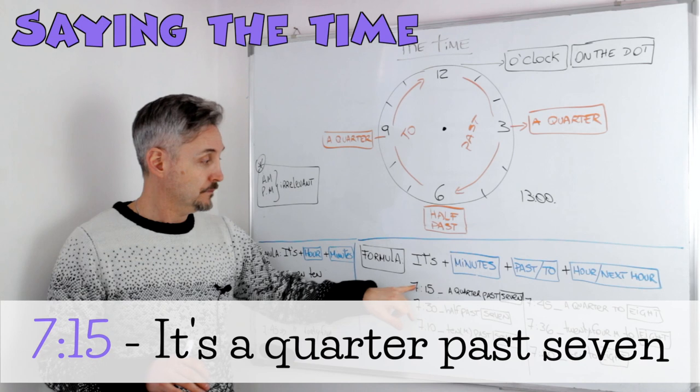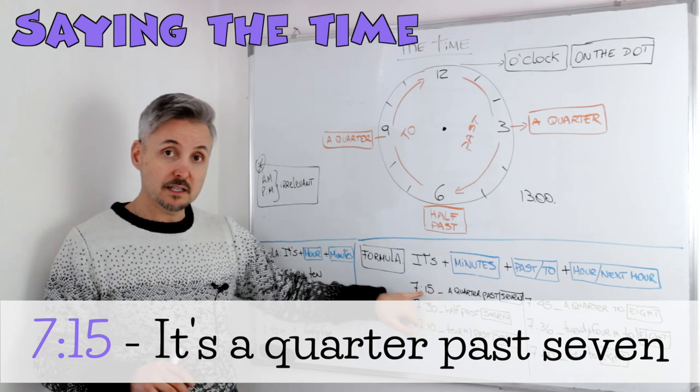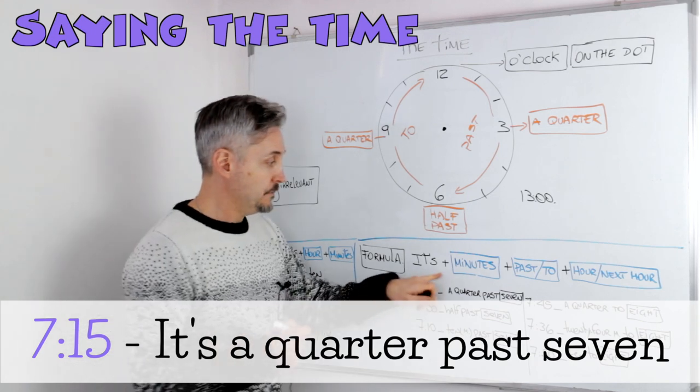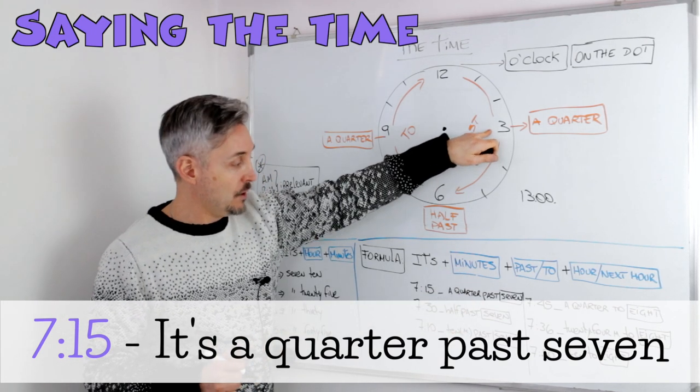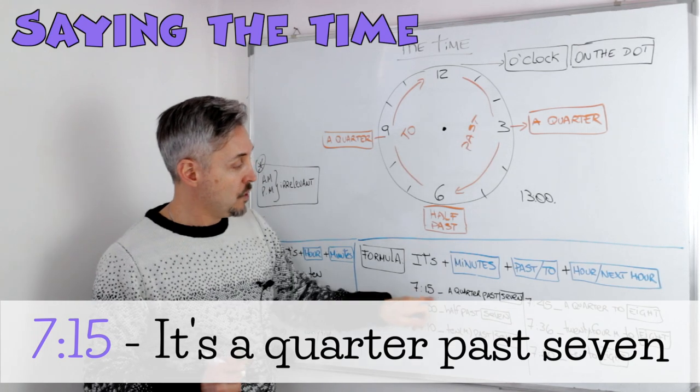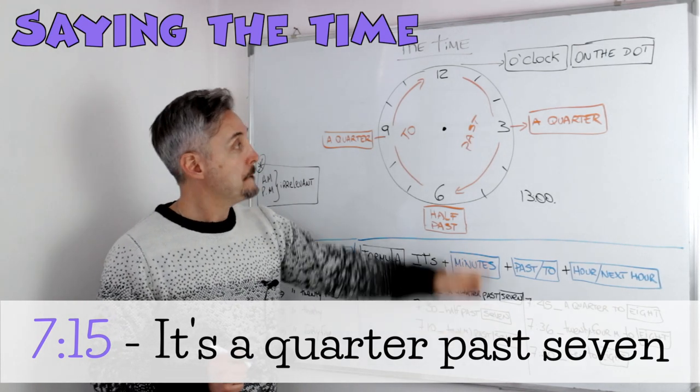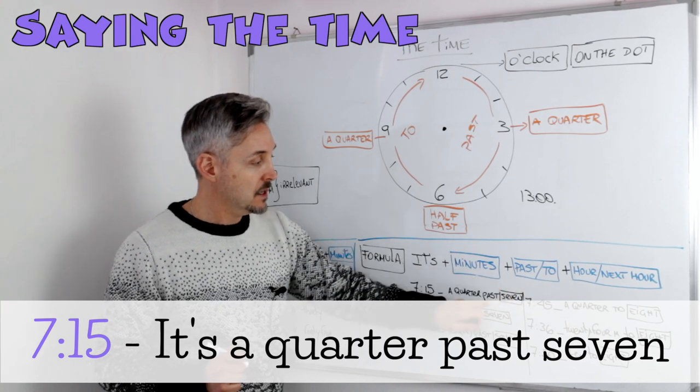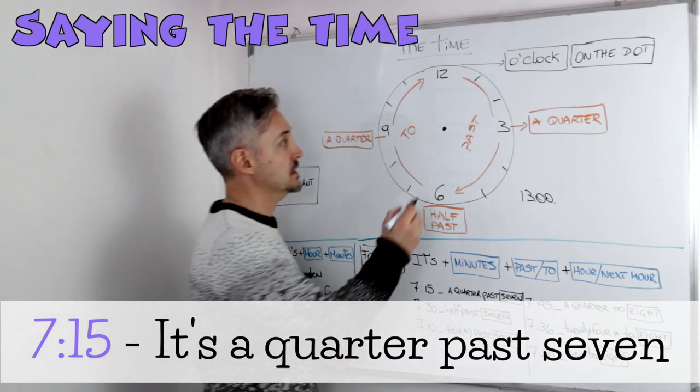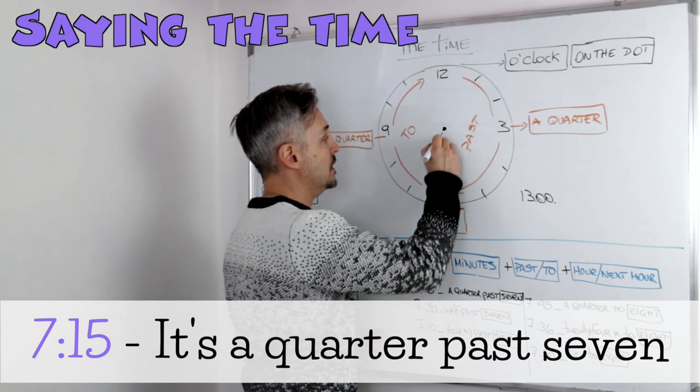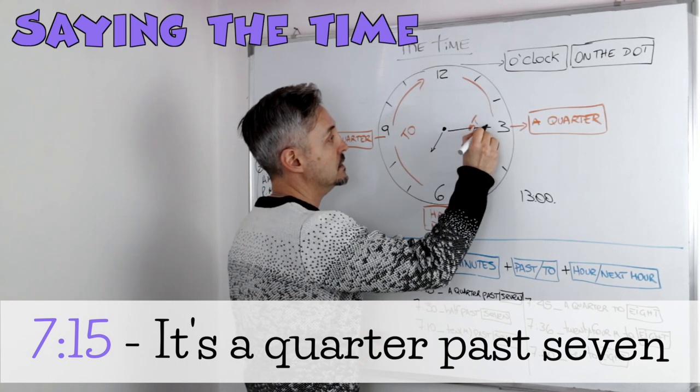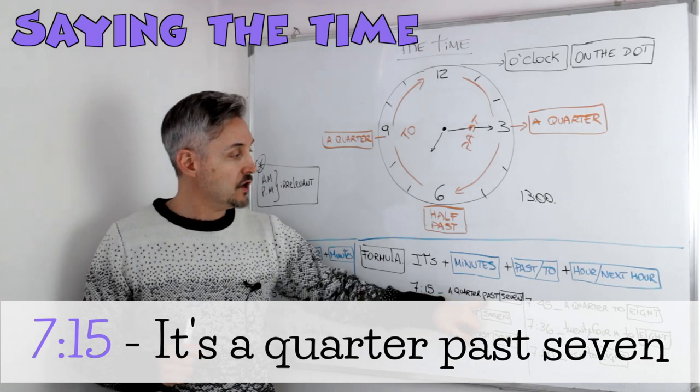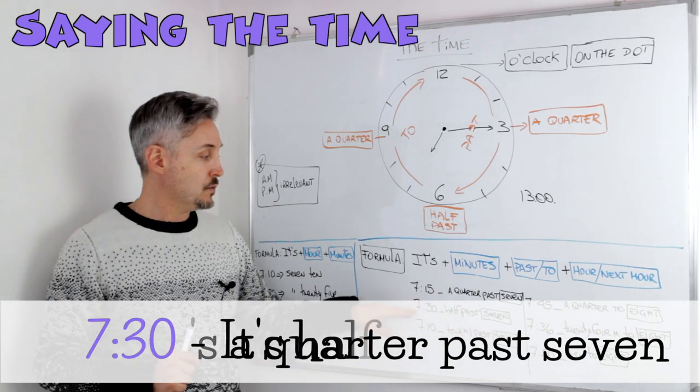So the formula for the most difficult one is: it's plus minutes plus past or to plus hour, the hour that you want to say or the next hour. I'm going to give you some examples just to show you the difference. So for example, 7, and you see the 7 and then 15 there, so it's a quarter. So we said a quarter right here is a quarter because it's 15, past, in this side is past, past 7. So we can say this will be the time: it's a quarter, first a minute, past 7.